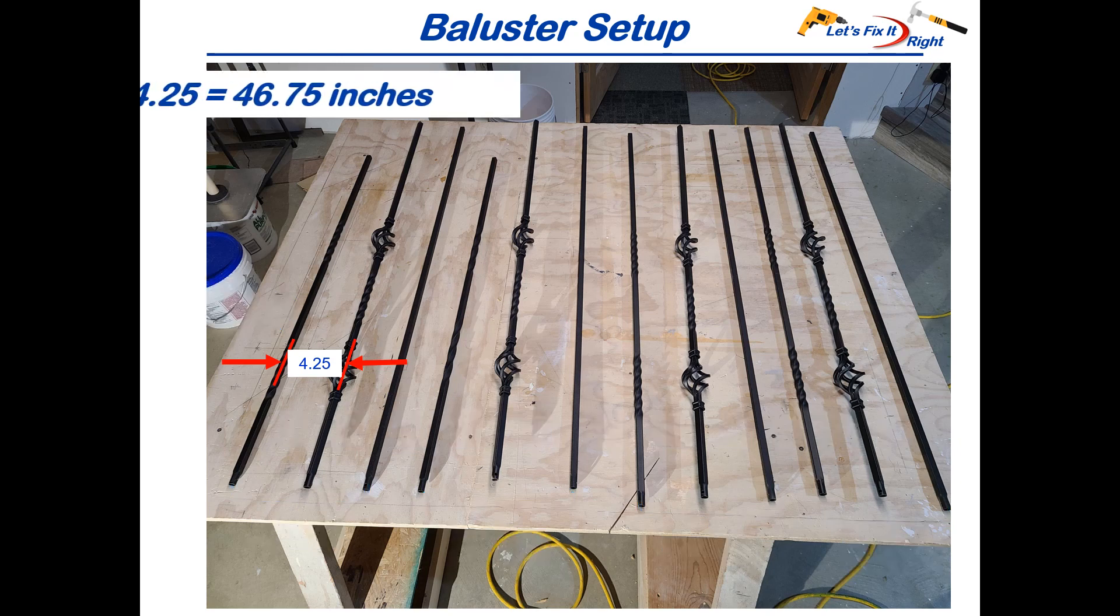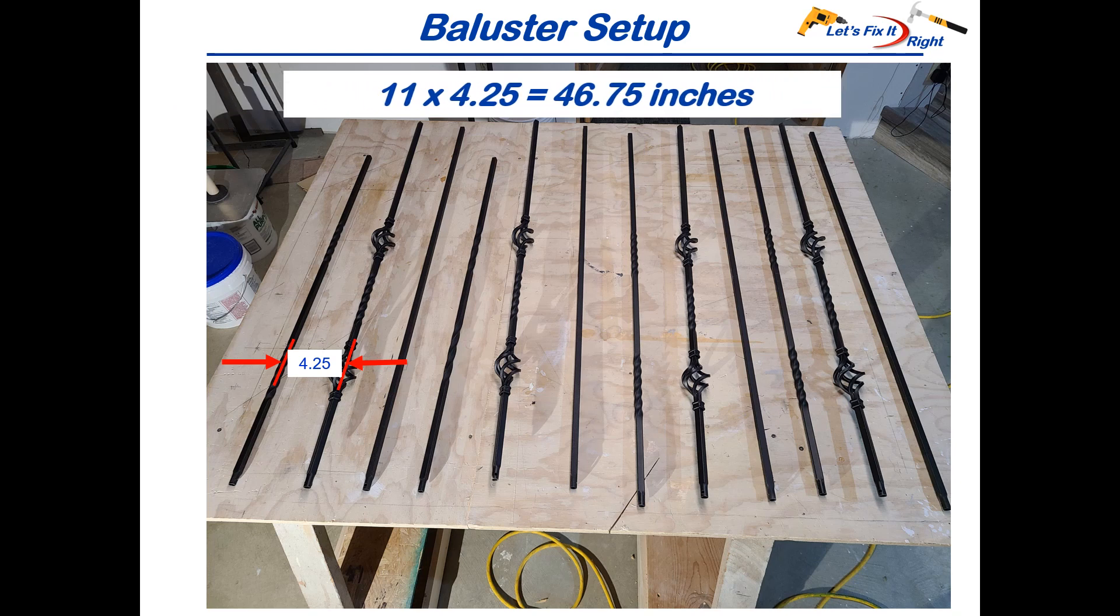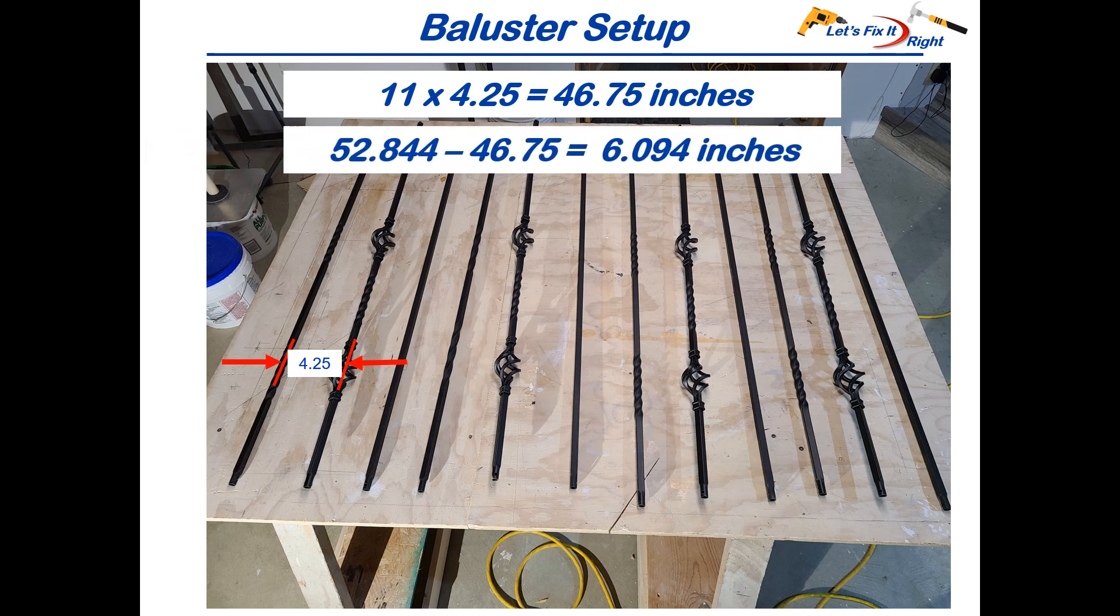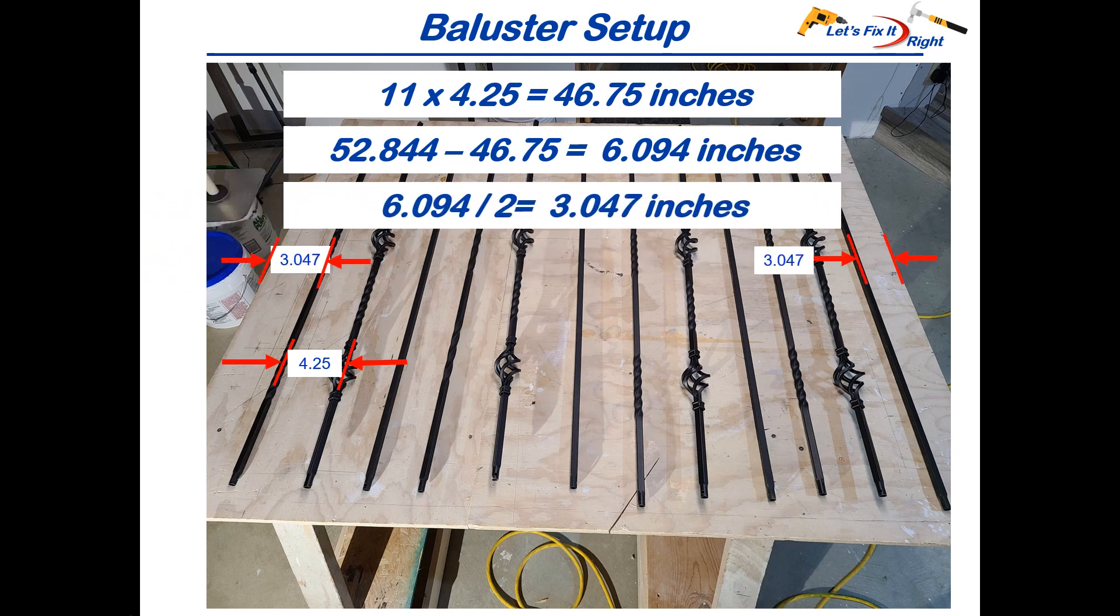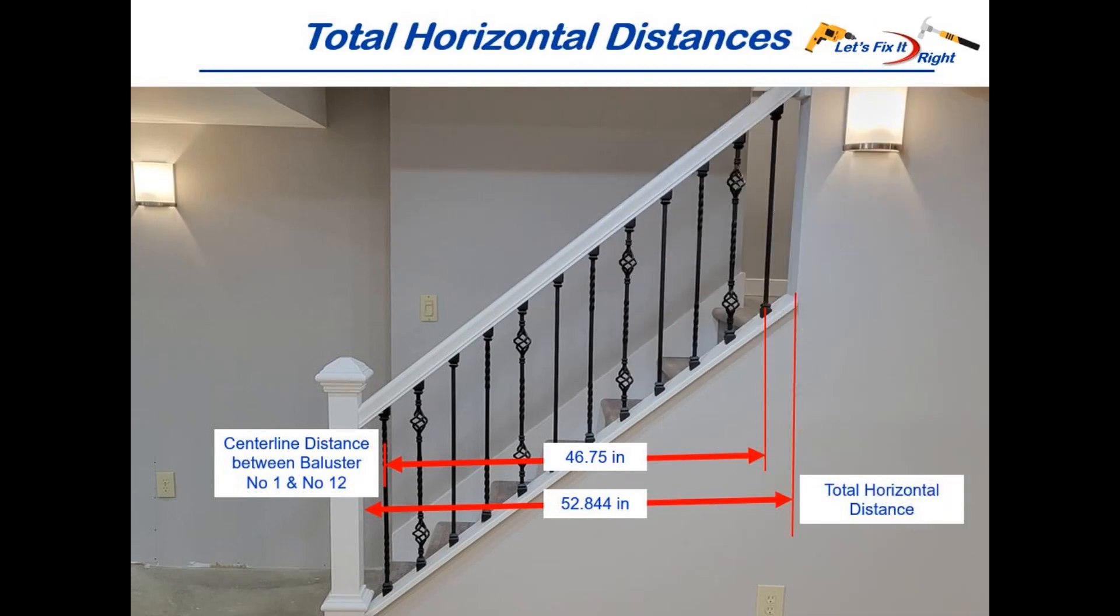11 times 4.25 equals 46.75 inches. This subtracted from the total horizontal width of 52.844 equals 6.094 inches for the two outside edges. This means that these two outside edges are 3.047 inches long each. This is a better easier to understand layout of these dimensions when transferred to our final product.